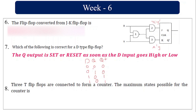If three flip-flops are connected to form a counter, the maximum possible states: each flip-flop holds one bit, so three flip-flops give three bits, and 2³ equals 8 states.